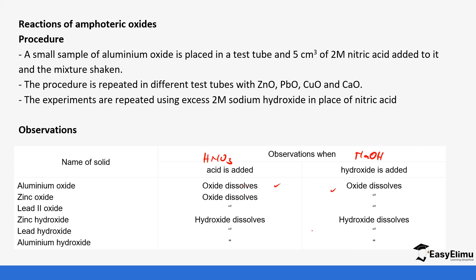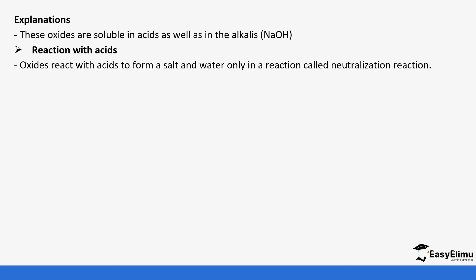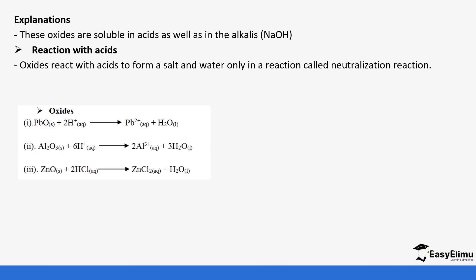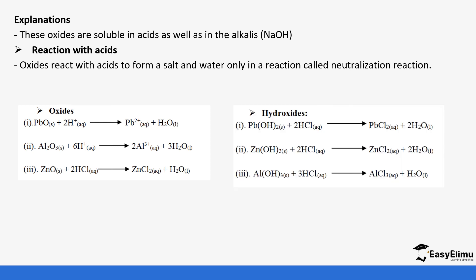The same applies for the hydroxides. Zinc hydroxide, lead hydroxide, and aluminum hydroxide all react with both nitric acid and sodium hydroxide. So these oxides are soluble in acids as well as in alkalis. They react with acid to form salt and water — a normal neutralization reaction. The lead oxide reacts with hydrogen ions to form lead ions and water, showing the neutralization process.